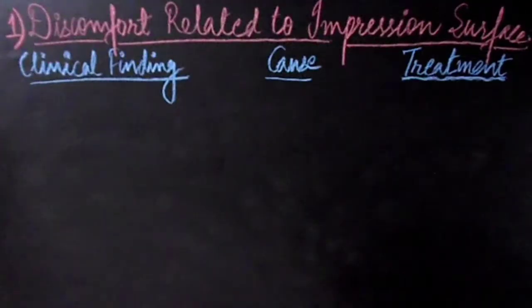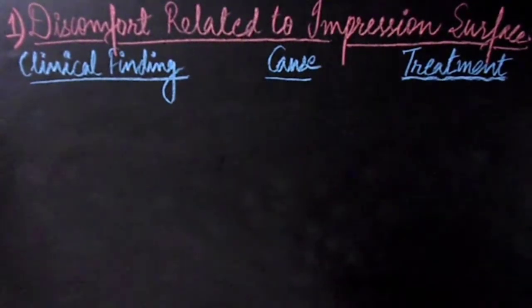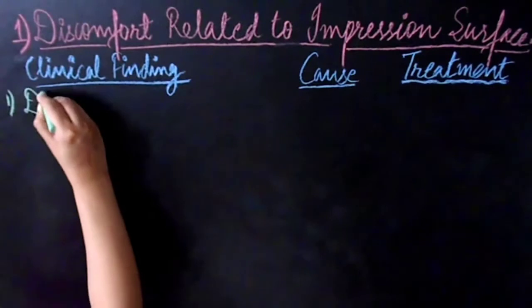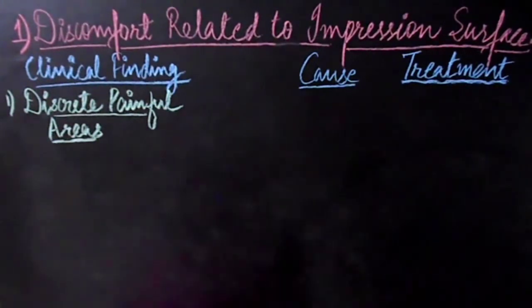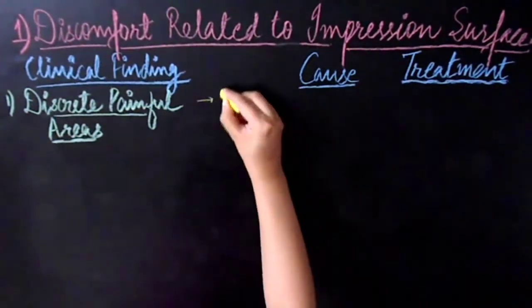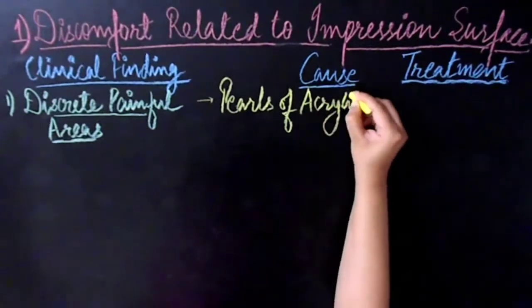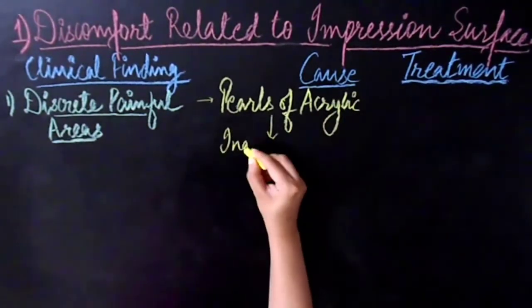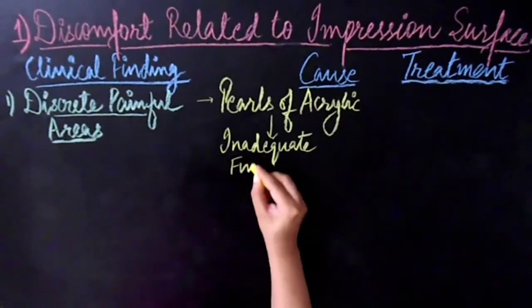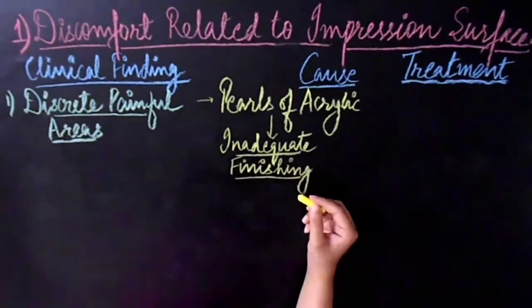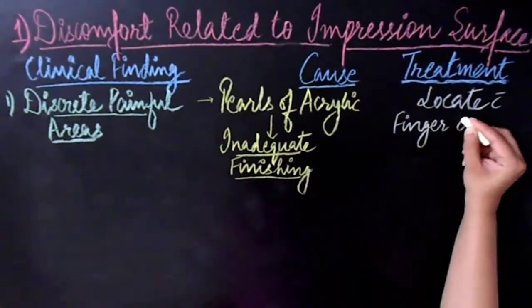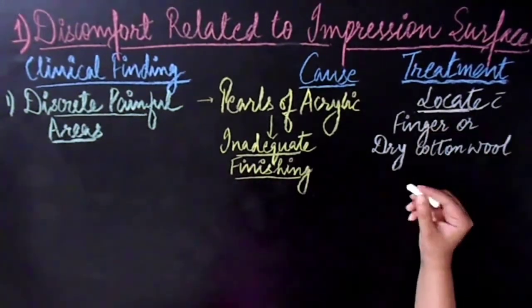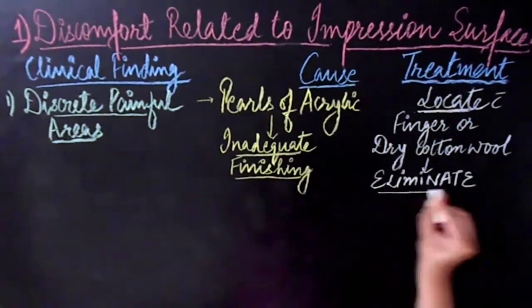Starting with discomfort related to the impression surface of the denture: if the patient presents with discrete painful areas, it is most probably due to pearls or nodules of acrylic on the fitting surface, which occur due to inadequate finishing by the lab. What we can do in this case is locate these with a finger or dry cotton wool, then eliminate or remove the irregularities or nodules.